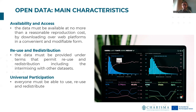First of all, availability and access. Data must be available at no more than a reasonable reproduction cost, preferably by downloading over the internet in a convenient and modifiable form. Second, reuse and redistribution. The data must be provided under terms that permit reuse and redistribution, including the intermixing with other datasets. And finally, universal participation: everyone must be able to use, reuse, and redistribute data.